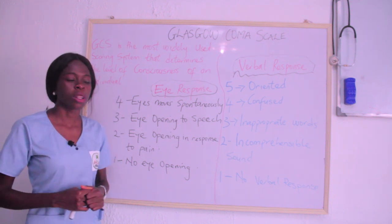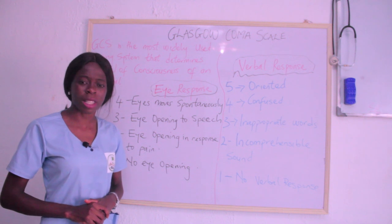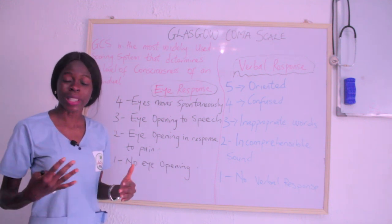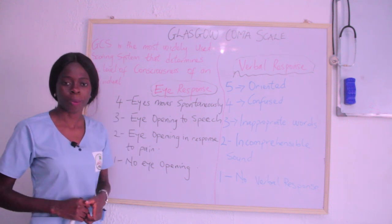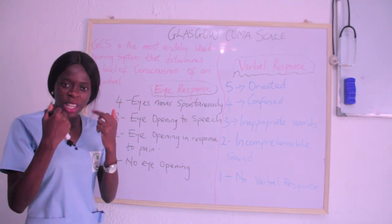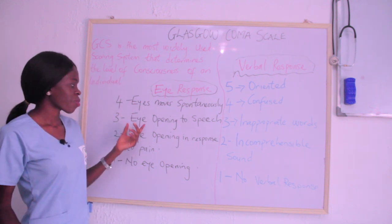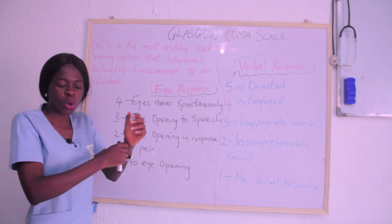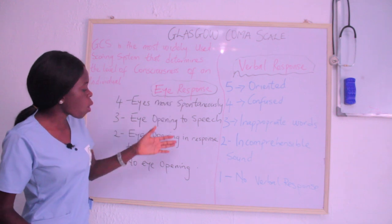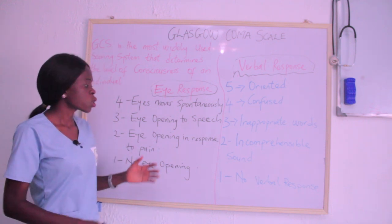We are going to use Mr. James as our example. As a nurse, I meet Mr. James — if his eyes move spontaneously, I give him four. If his eyes are not moving spontaneously but move when I talk to him, I give him three. If he doesn't move his eyes spontaneously or to speech but moves them when I apply pain or pressure to his body, I give him two. If there is no eye response at all, I give him one.